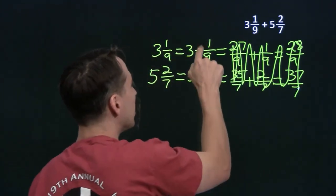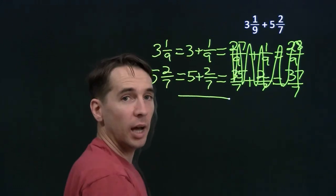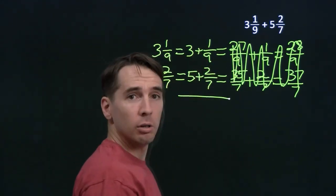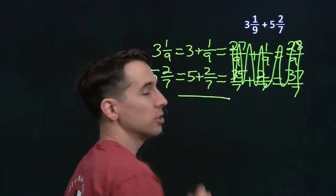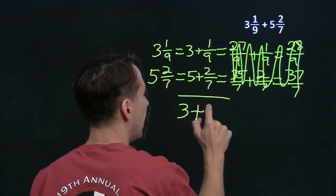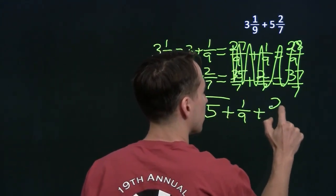We don't need that at all because all we have to do is add these two numbers. 3 plus 1 ninth plus 5 plus 2 sevenths. We can add these four numbers - 3, 5, 1 ninth, and 2 sevenths - in any order we want to. We just add the 3 and the 5, and we add the 1 ninth and the 2 sevenths.